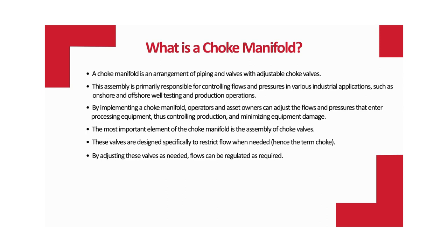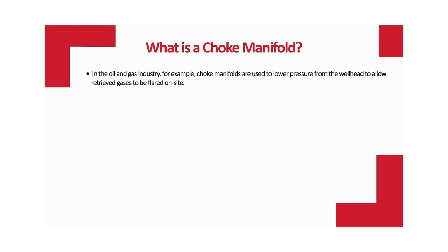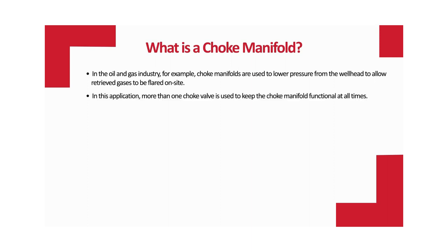Some of the most common ancillary equipment found on a typical choke manifold includes choke boxes, pressure sensors, pressure sampling ports, and thermowells to monitor pressure, temperature, and other fluid properties. In the oil and gas industry, choke manifolds are used to lower pressure from the wellhead to allow retrieved gases to be flared on site. More than one choke valve is used to keep the choke manifold functional at all times.